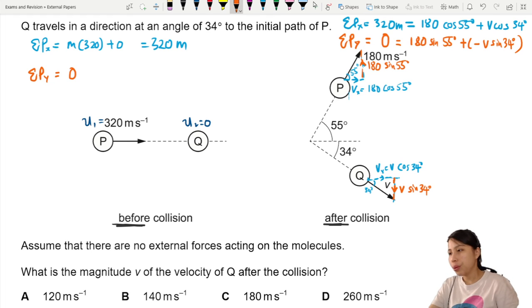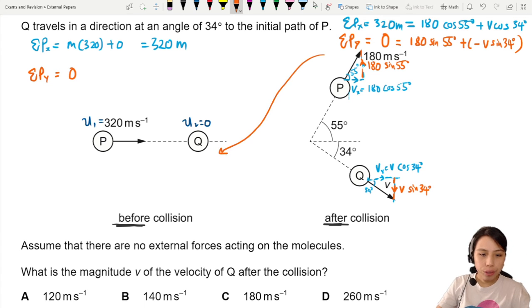I think we are ready to do our solving. So we have two equations. Which one shall we use? I think we'll try the vertical one first. So I'm going to take the vertical one up there, bring it down here for some calculations. So that will tell me that 180 sin 55 equals to V sin 34.